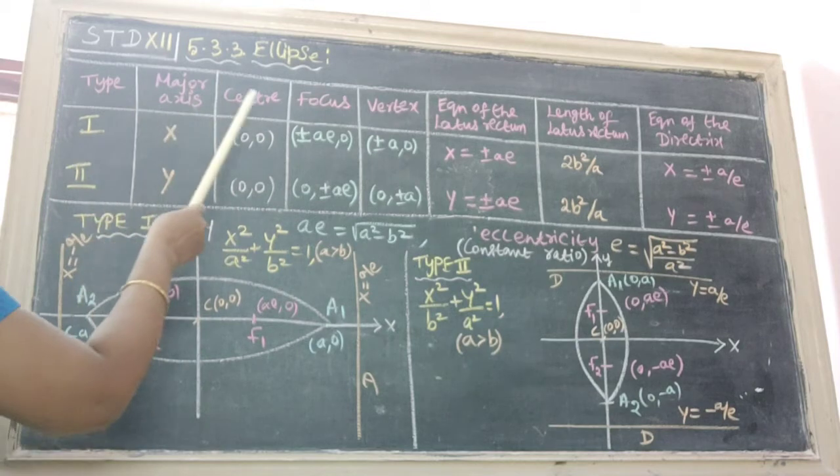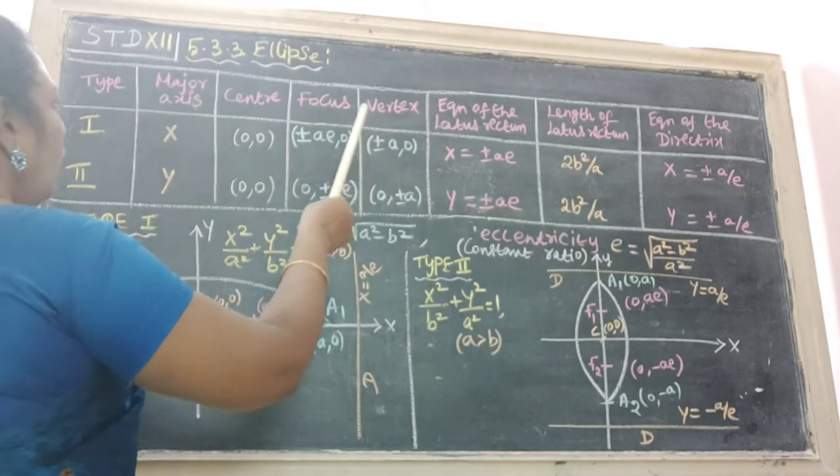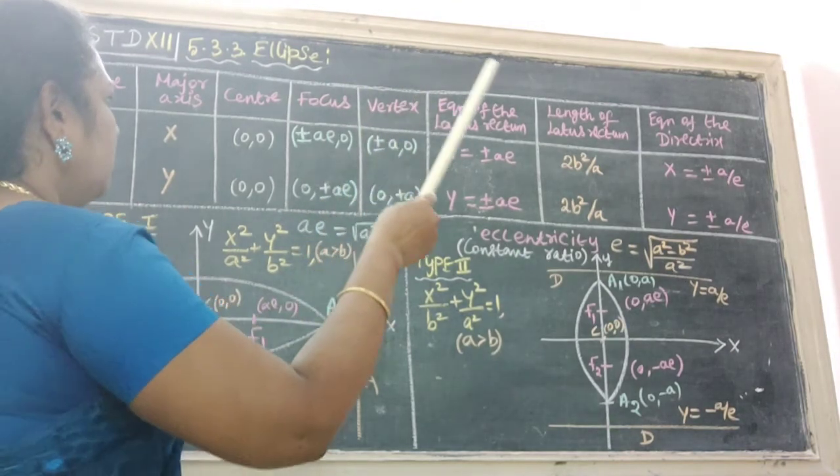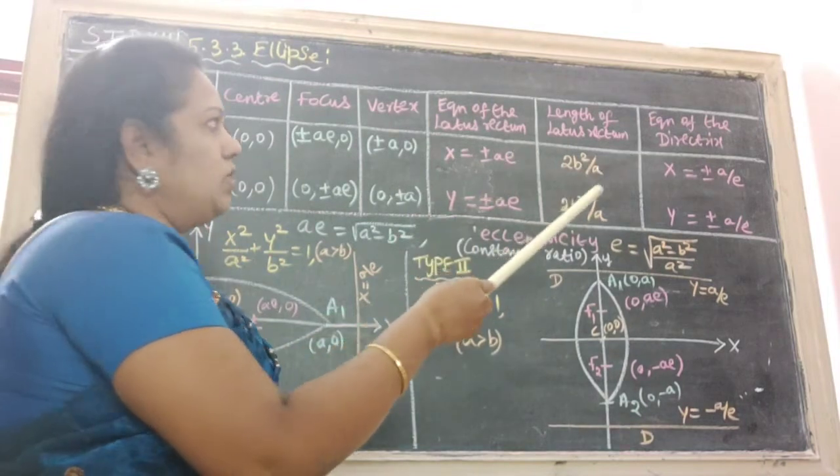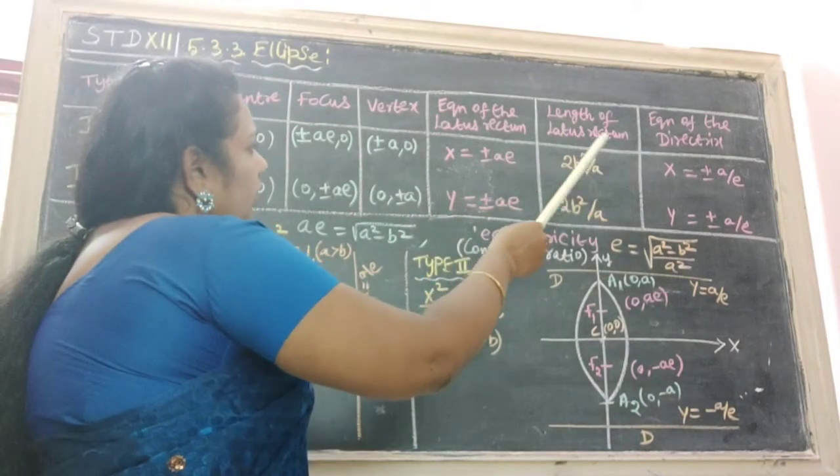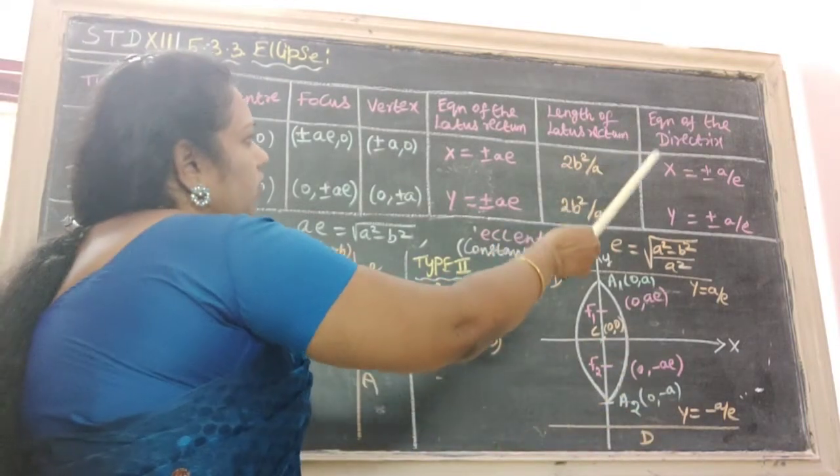Here major axis x, center 0, 0, focus plus or minus ae, 0, vertex plus or minus a, 0. Equation of the latus rectum, capital x is equal to plus or minus ae. Length of latus rectum, 2b square by a. Last one, the equation of the directrix, capital x is equal to plus or minus a by e.